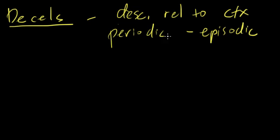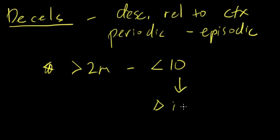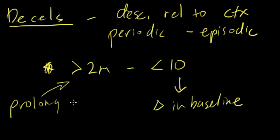Periodic and episodic decels - just like accelerations - prolonged decels last longer than two minutes and less than 10 minutes. If they last more than 10 minutes, it's called a change in baseline. So more than two minutes to less than 10 minutes is a prolonged decel.